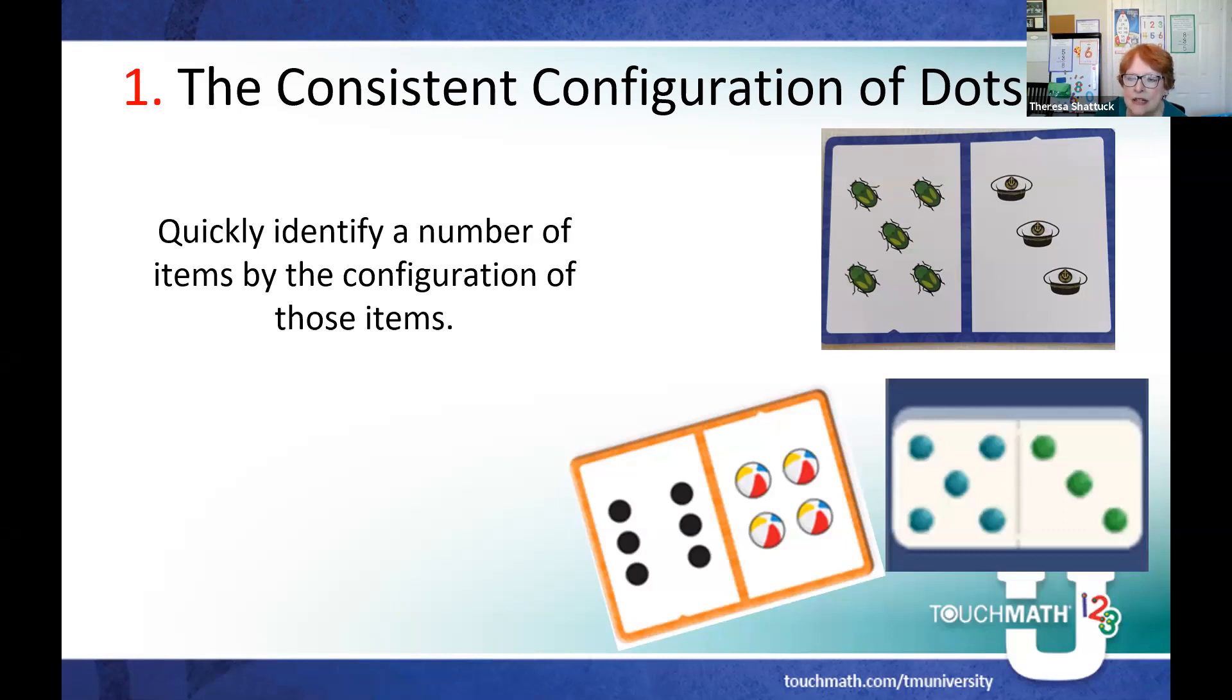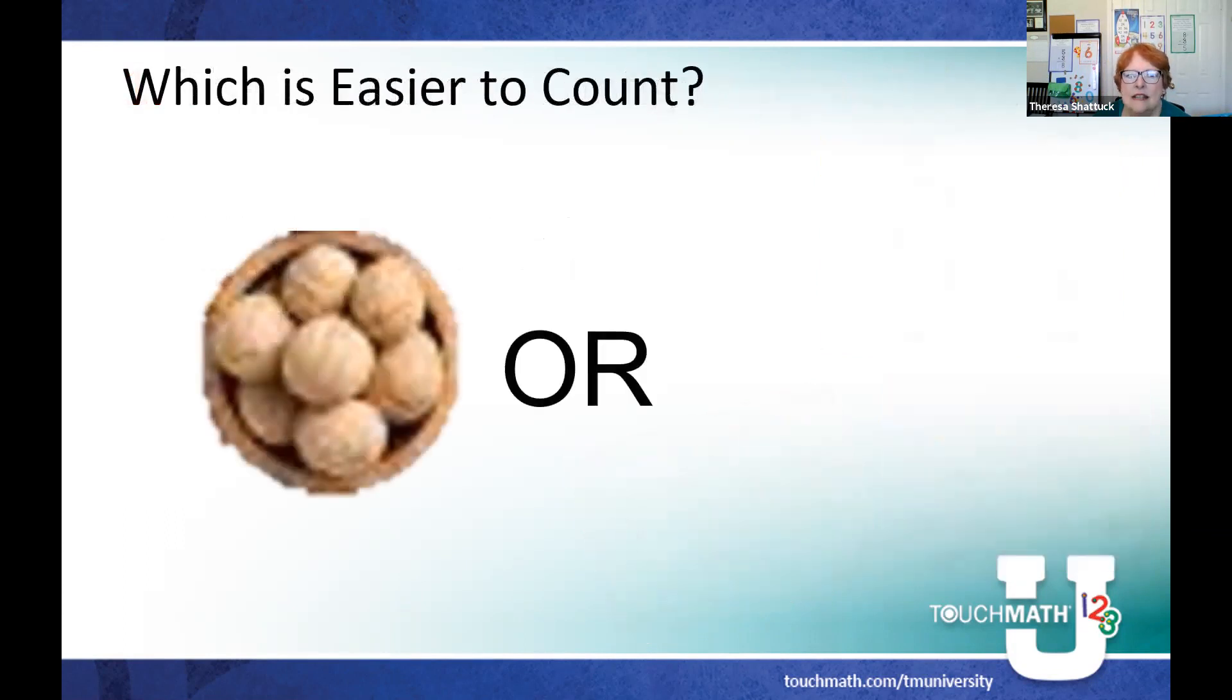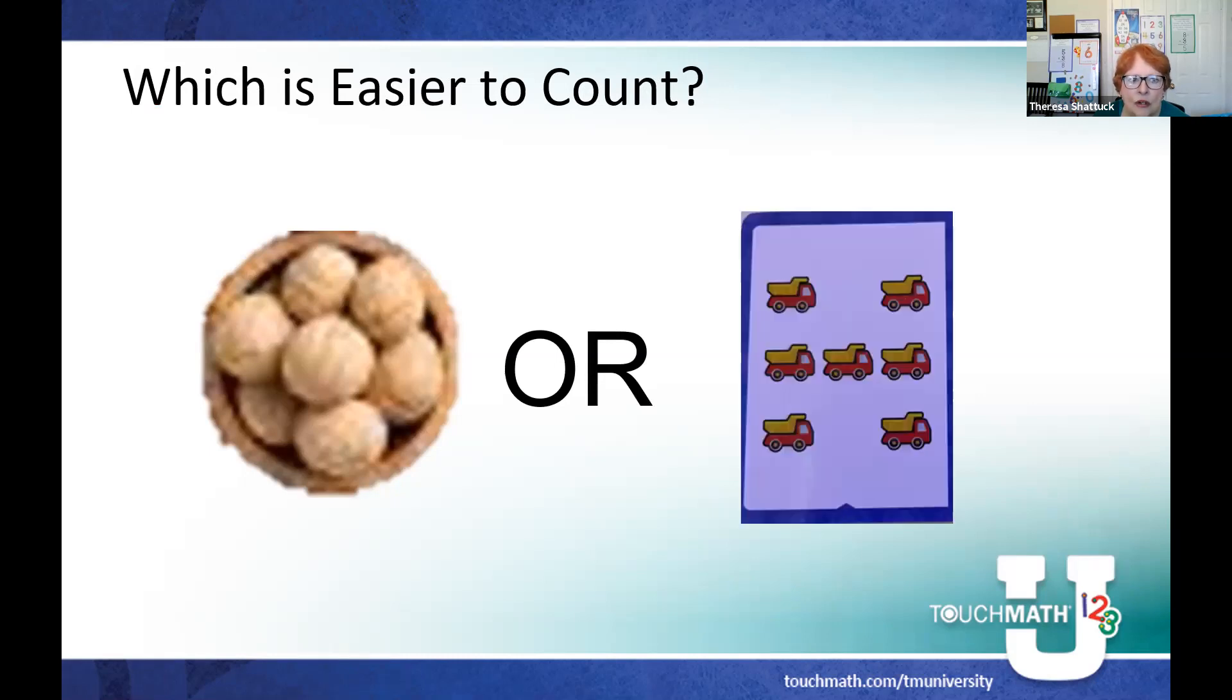When I used to play dominoes with my husband's parents, they had a set that was black but did not have the line between them. You always knew when I had the double zero domino because I'd keep flipping it looking for the dots. We identify by configuration of items. Which is easier to count: this pile of balls or when we look at the configuration? It's much easier to count it.